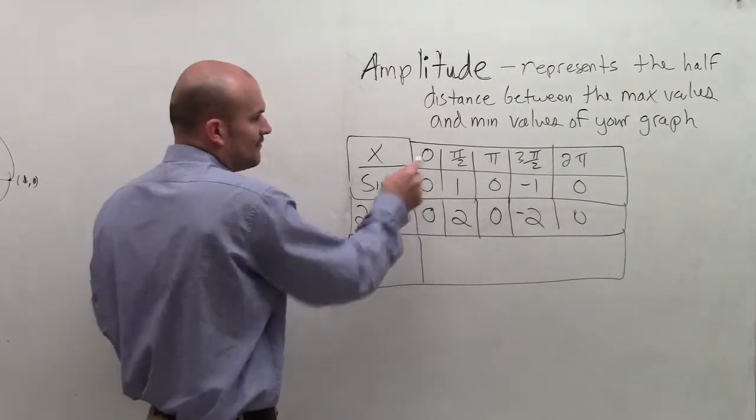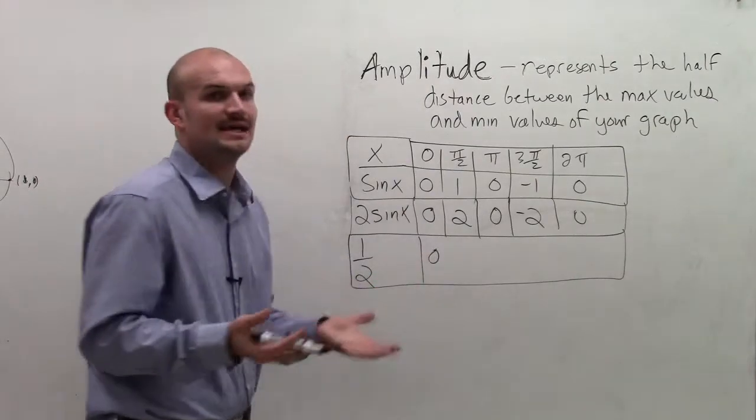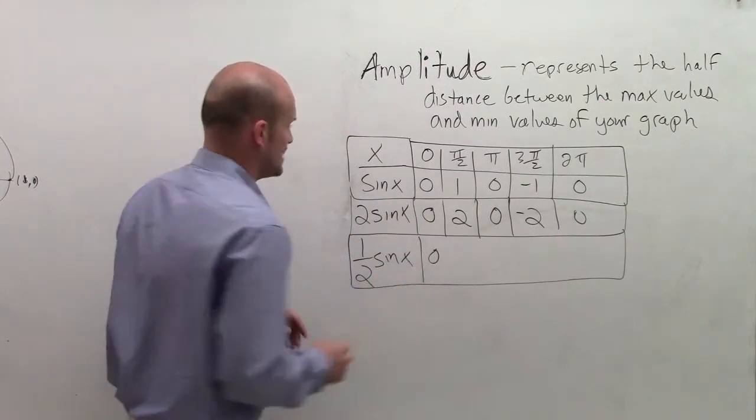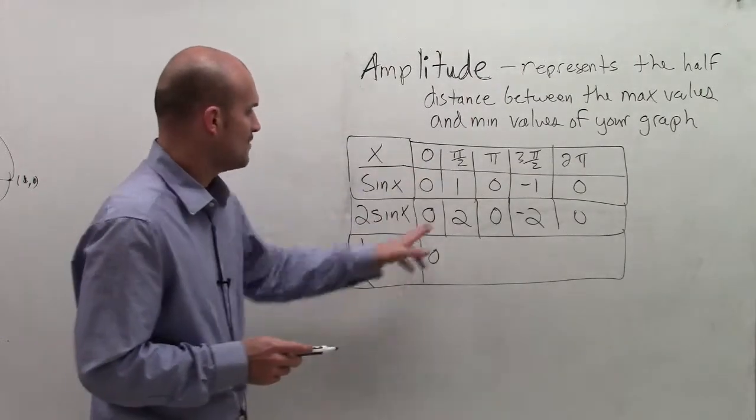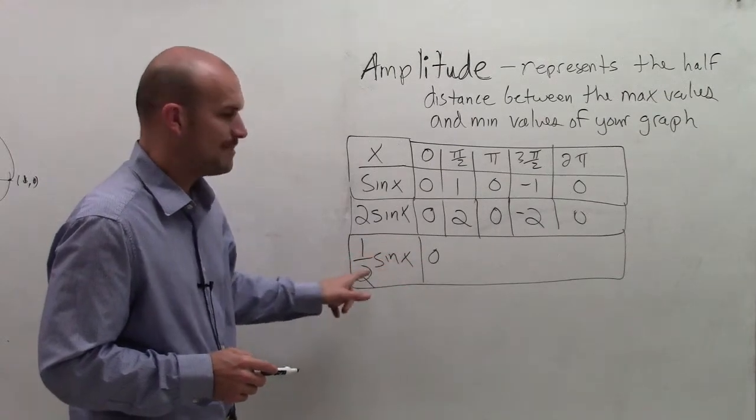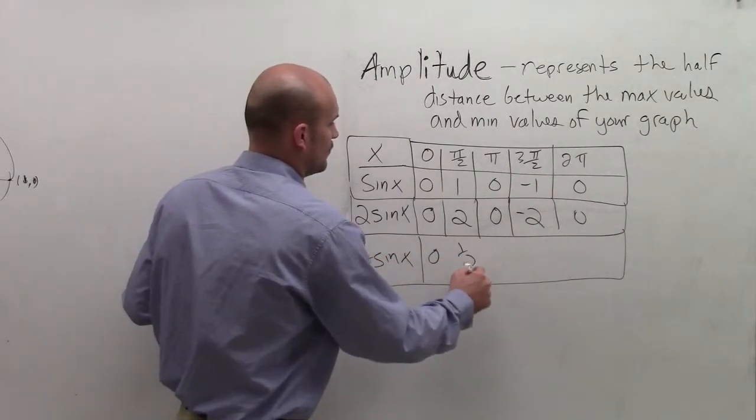And let's see what would happen if I multiply by one half. Again, we're going to come up with the function of 0 is not going to change. You're still going to have 0, even if it is one half of sine of x. So therefore, if I multiply, sine of pi over 2 would be 1. But then multiply by one half is going to leave me with one half.